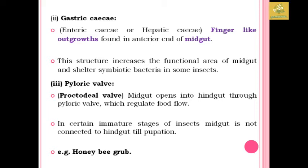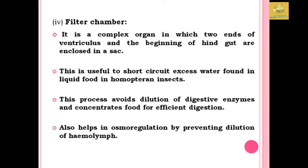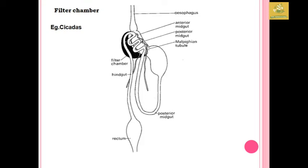The filter chamber is a complex organ in which two ends of the ventriculus and the beginning of the hindgut are enclosed in a sac-like structure. It short-circuits excess water found in liquid food, exactly in homopteran insects, and avoids dilution of digested foods for efficient digestion. It also helps in osmoregulation by preventing dilution of hemolymph. I have provided a cross-sectional view of the filter chamber in cicadas.